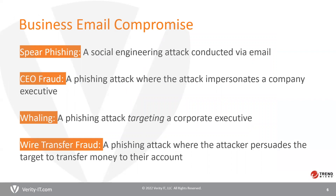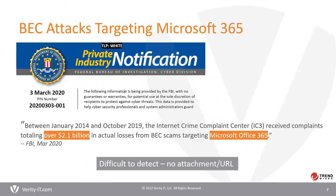A business email compromise attack is any phishing attack where the target believes they've received an email from a genuine business. Verizon's 2020 Data Breach Investigation Report found that most BEC attacks now involve wire transfer fraud, where the attacker persuades the target to transfer money to their account. Due to the popularity of cloud services, especially Office 365, BEC attacks have been focused on these platforms. The FBI actually issued a warning saying they received complaints totaling over $2.1 billion in actual losses from BEC scams, targeting Microsoft Office 365, Google Workspace, and file sharing applications.